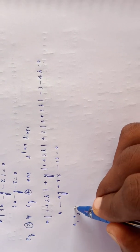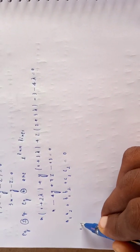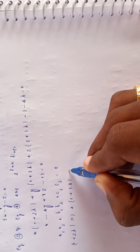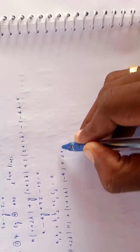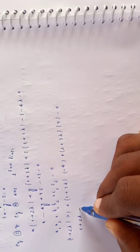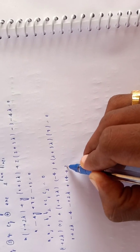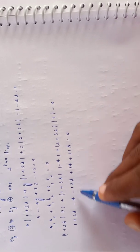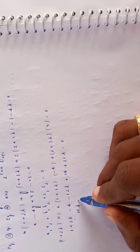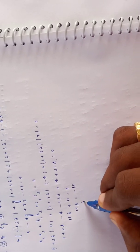Now applying the second perpendicularity condition a1a2+b1b2+c1c2=0 with plane 4 (coefficients 1, -4, 7): (1+2λ)(1) + (1+3λ)(-4) + (2+3λ)(7) = 0. Simplifying: 1+2λ - 4-12λ + 14+21λ = 0, giving 11+11λ = 0, so λ = -1.